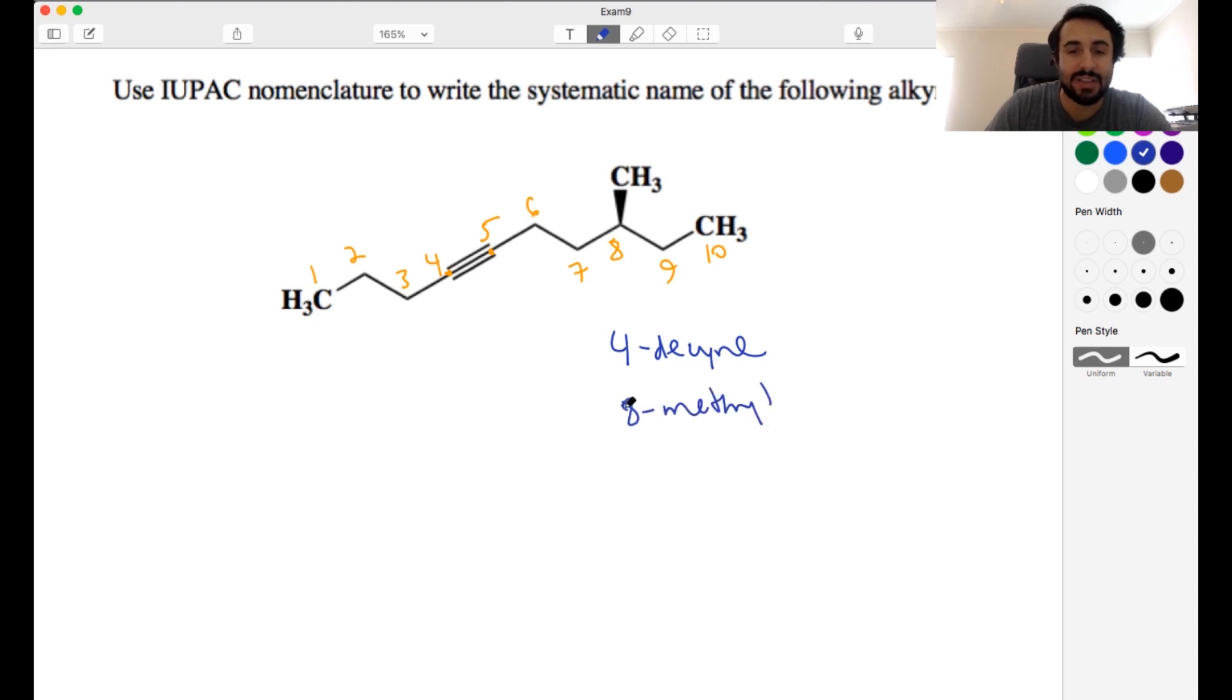This is a stereocenter, and so let's draw in the implied hydrogen. We know that that is going to be priority 4, but then the rest we have carbon, carbon, carbon, those all tie. So carbon is attached to hydrogen, hydrogen, hydrogen. That will actually be the lowest priority of the 3. Here we have hydrogen, hydrogen, carbon, hydrogen, hydrogen, carbon. So we're still tied.